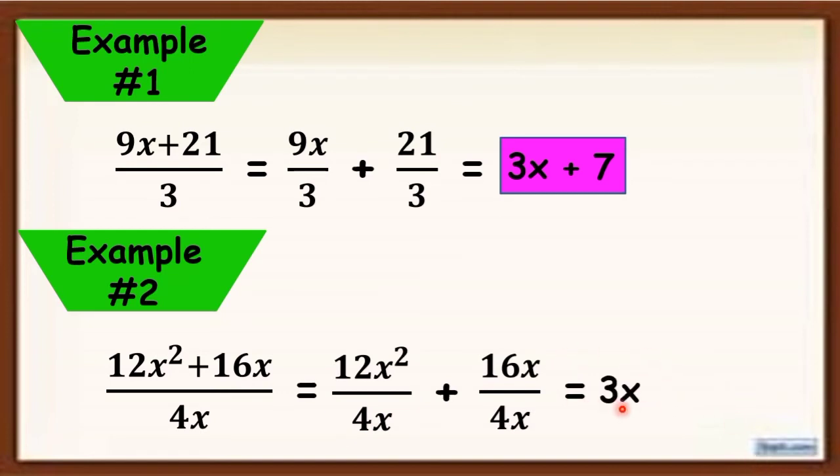Why 3x? 12 divided by 4 is 3, and x raised to 2 minus 1 equals x. That's why we have 3x as an answer. Then, plus 16x divided by 4x equals 4. So, the final answer is 3x plus 4.